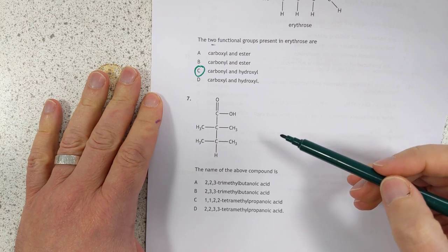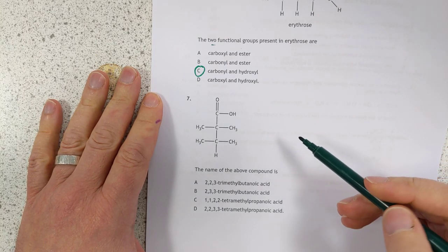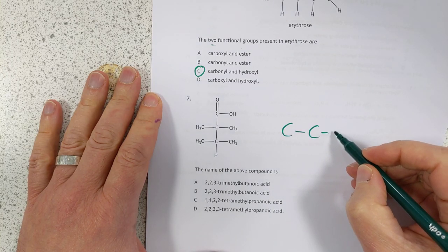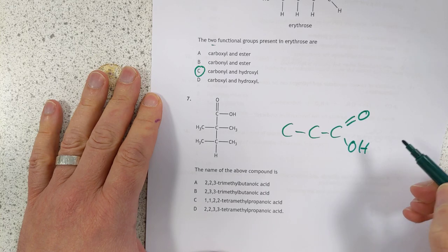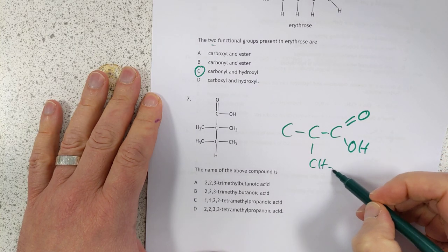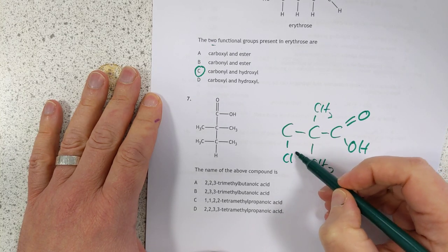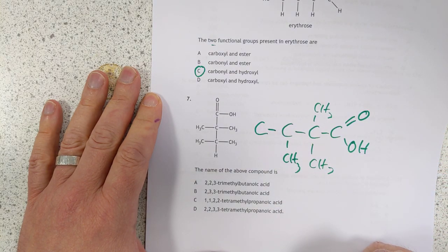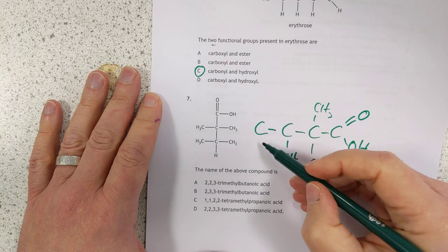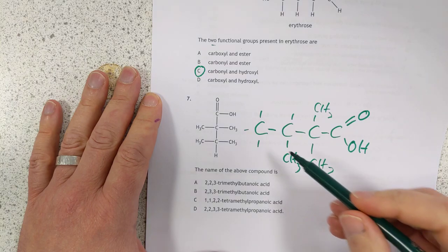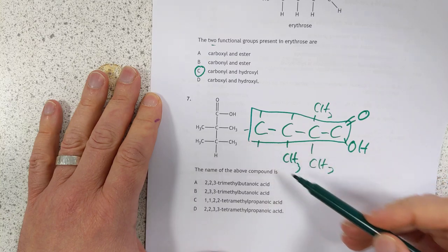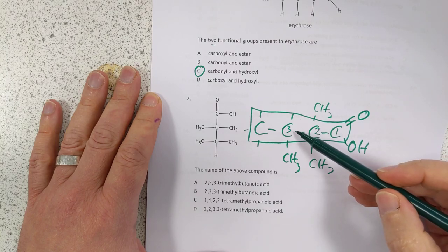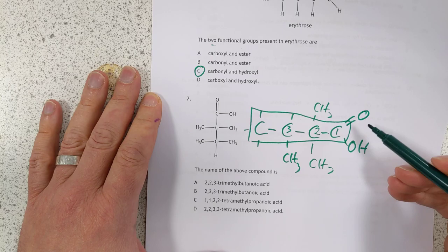Number 7. The name of the above compound. So it's a carboxyl. They've drawn it this way, just to help things. I'd be tempted to redraw it a more familiar way. Don't be afraid to take charge and draw stuff on the paper. There's a CH3 here, there's a CH3 here, there's a CH3 here, and you can't draw one more up there because it's the same as adding another carbon to the chain. That's a sneaky one. So basically it is in fact a butanoic acid. And we number from this end because it's nearest the functional group. So I think we're going to have 2,2,3-trimethyl-butanoic acid, which is A.